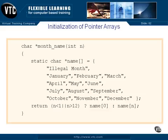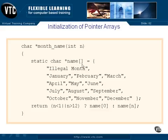Now, at first glance, this probably looks to you just like the multi-dimensional array initialization that we just did in the previous video, but this is not. This is an initialization of a pointer array. Notice that with our static character pointer here, we have a name array, but there's only one dimension to it. This is not really a multi-dimensional array — this is an array of pointers.